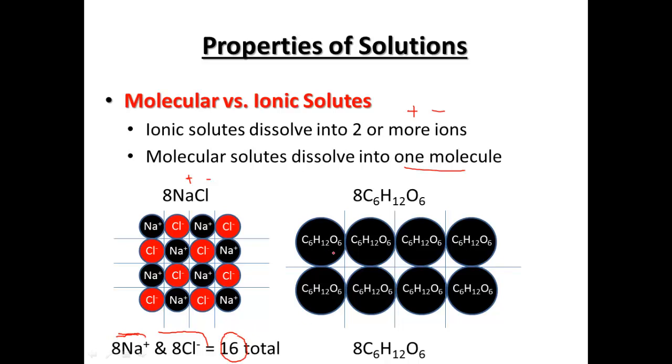So we get two parts or 16 total particles. So versus glucose molecule versus ionic, when we start out with eight, we end up with eight. So we get much more impact from the ionic because we're looking at the number of particles. We get way more particles with our sodium chloride.